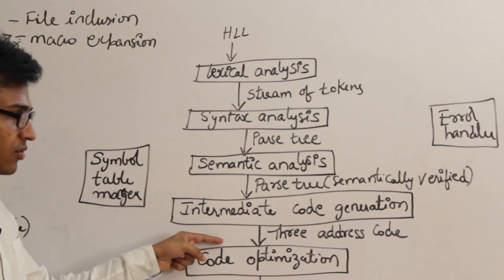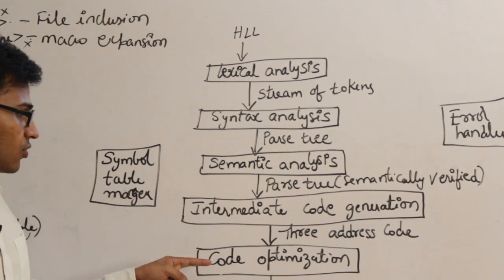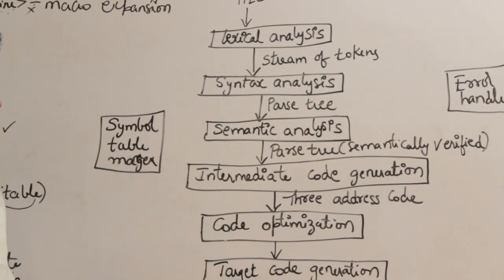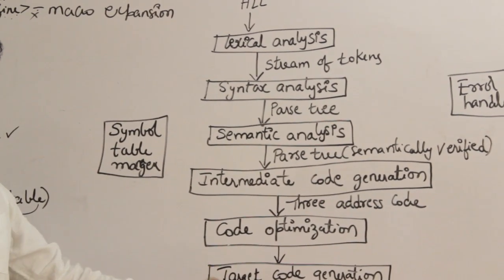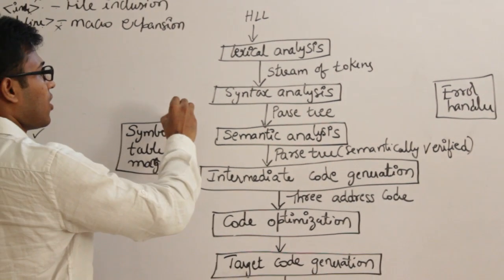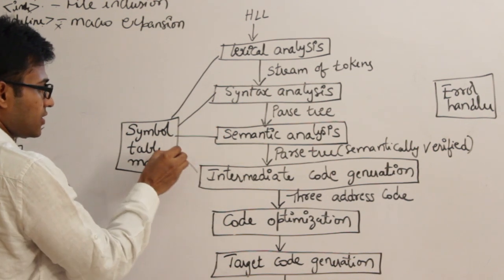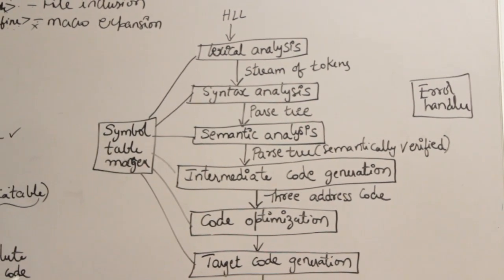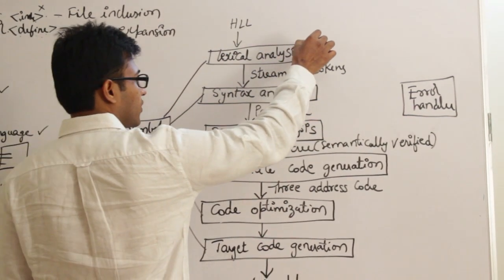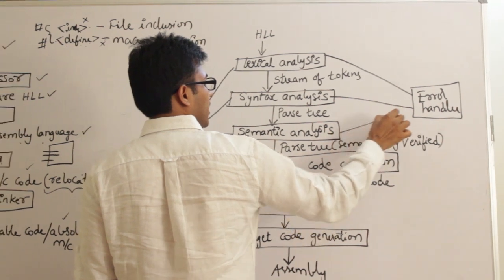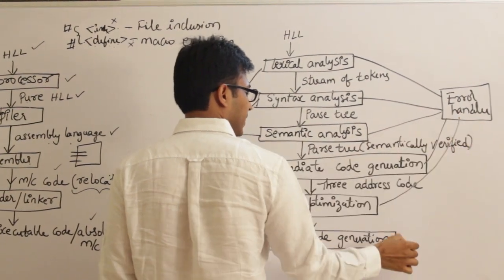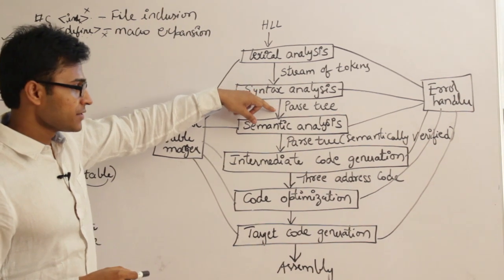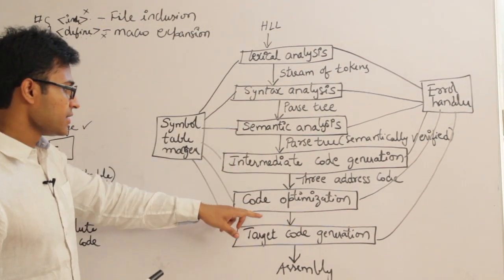This parse tree will be given to the intermediate code generator, which generates three-address code — a very popular form of intermediate code. The output of the intermediate code generator will be given to the code optimizer, whose main purpose is to reduce the size of the program or the number of lines. Then it will be given to the target code generator, which finally generates the assembly code. During all these phases, all the software modules take support from something called the symbol table manager, and all of them talk with a module called the error handler.